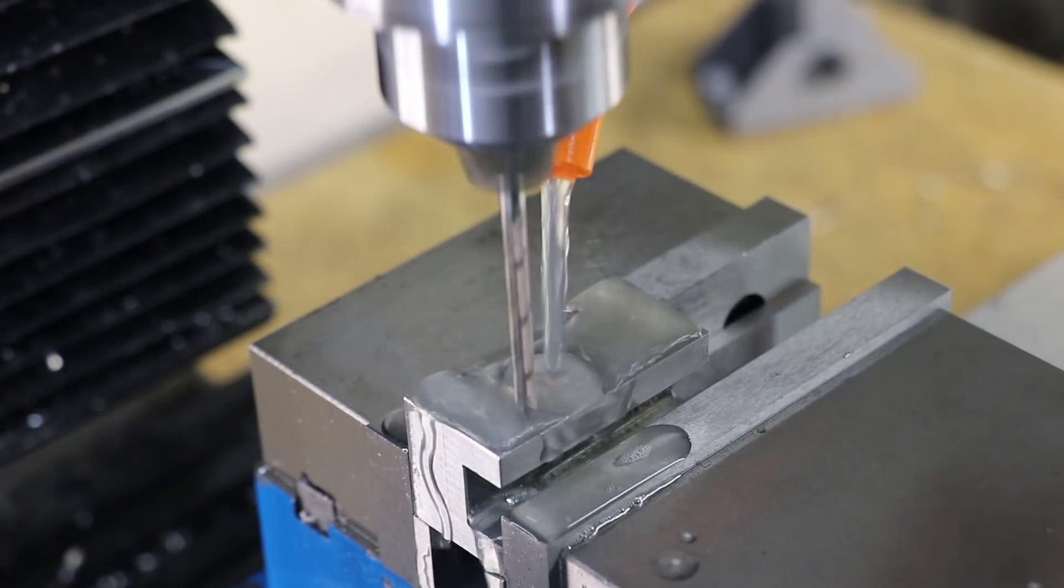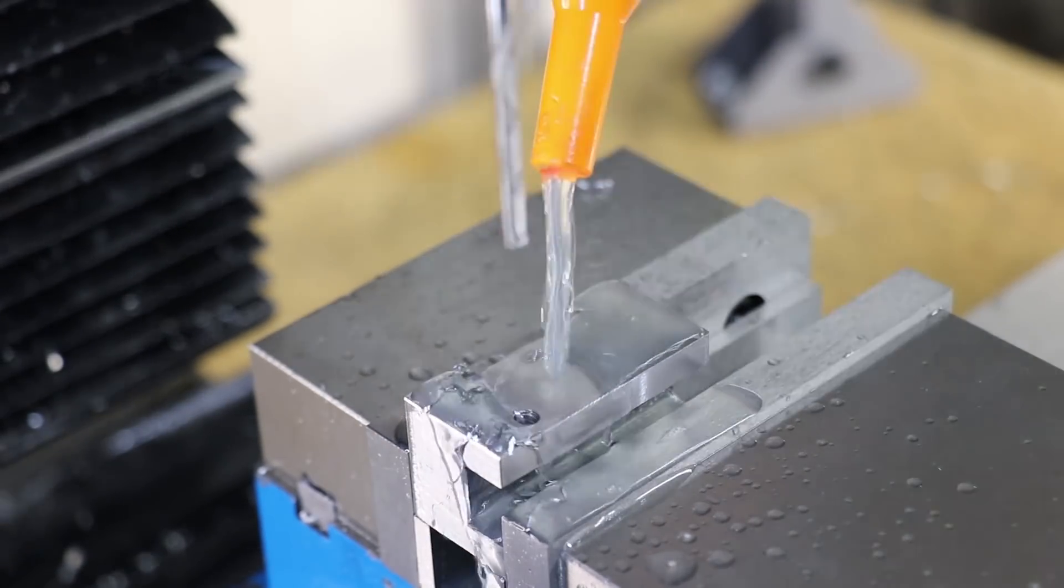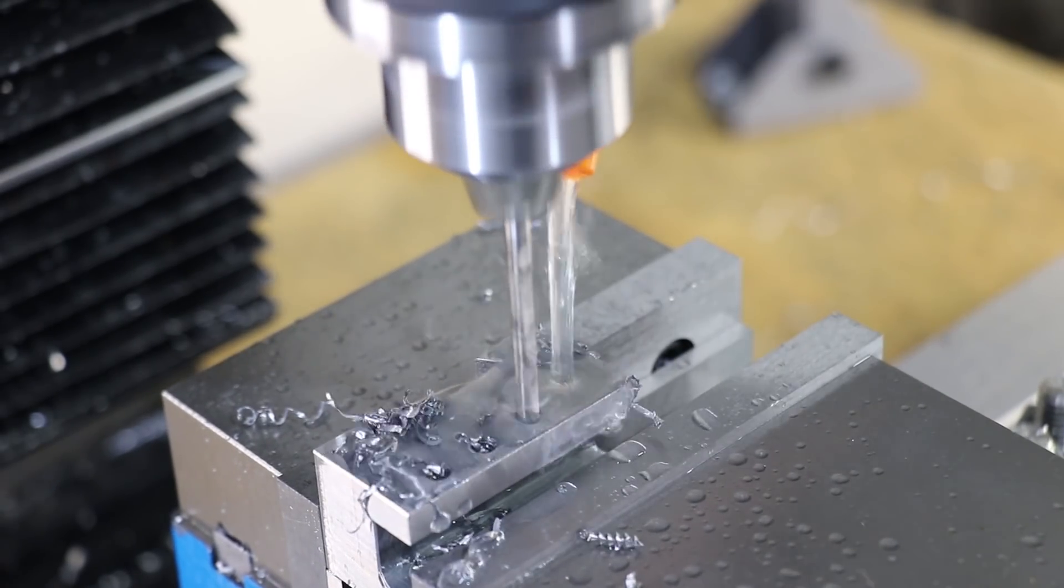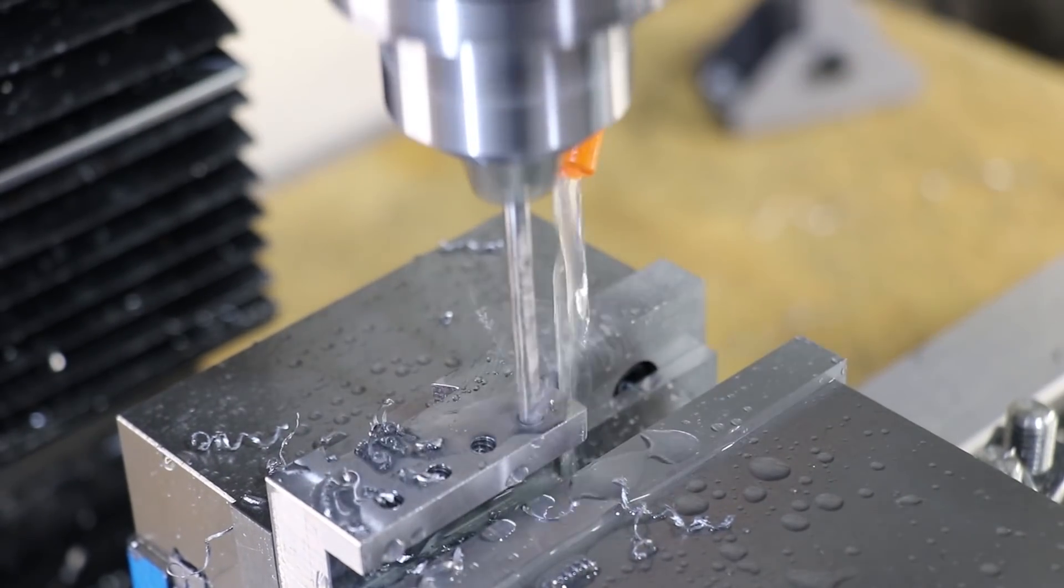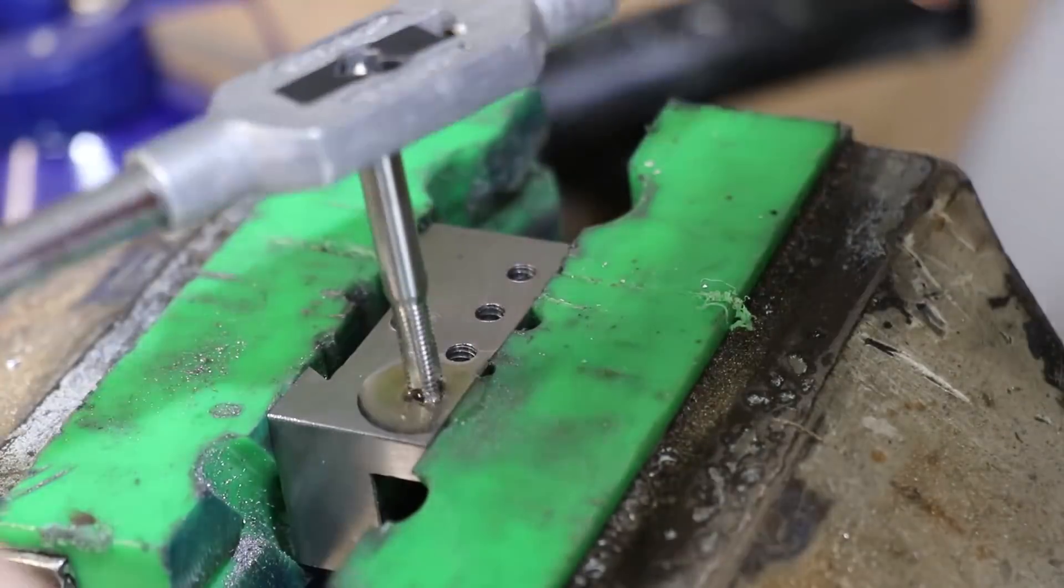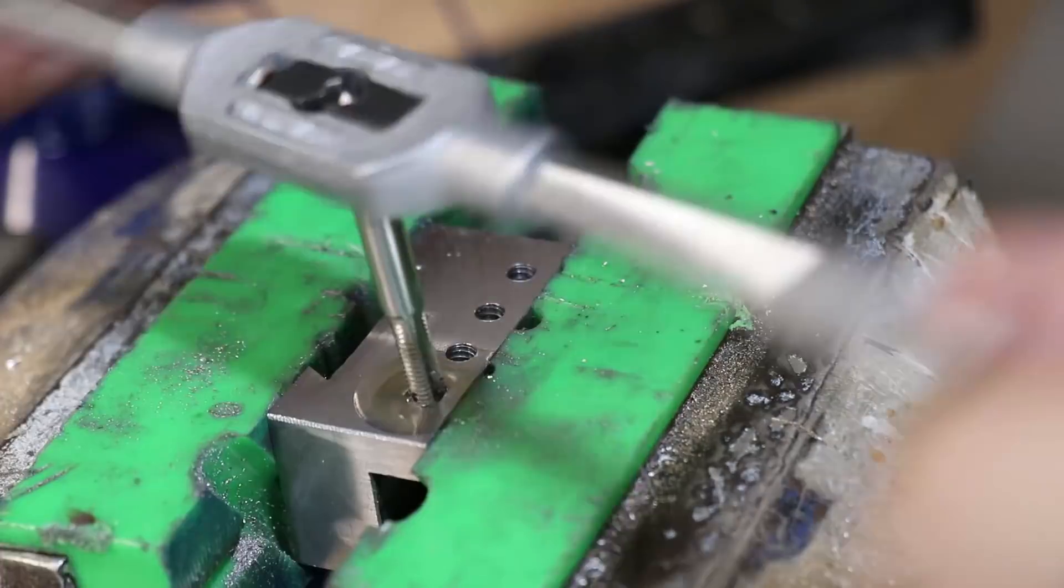The next thing I'll do will be to drill four holes for the locking grub screws and one at the back for the height adjustment. And that's the main tool holders done for the moment.